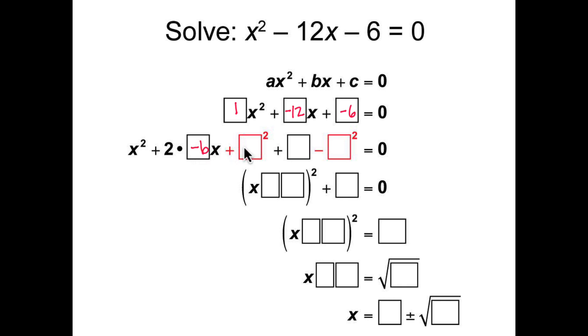We then take the same negative 6 and we square it. Negative 6 squared. But you can't add a number to one side of the equation without changing the equation. So therefore, we also have to subtract this negative 6 squared.